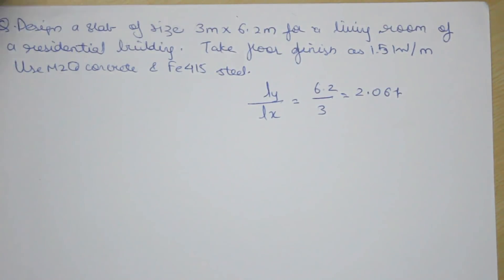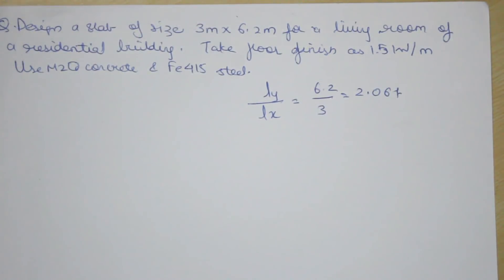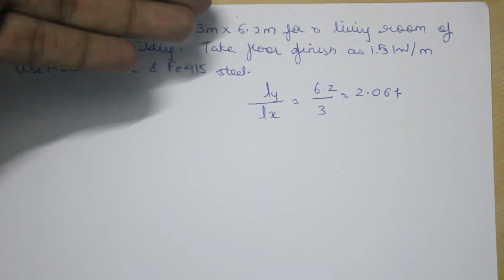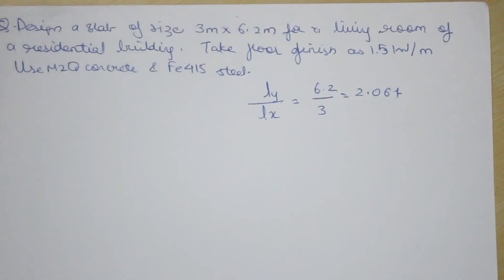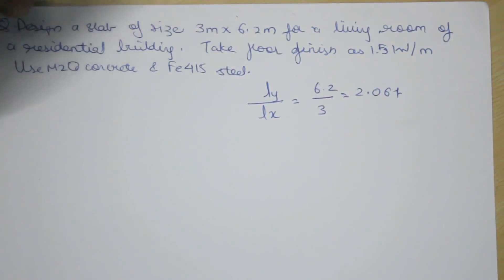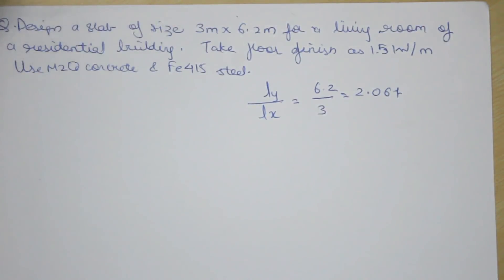The problem is to design a slab of size 3 meters by 6.2 meters for a living room of a residential building. The floor finish is given as 1.5 kN/m², using M20 concrete and Fe415 steel.